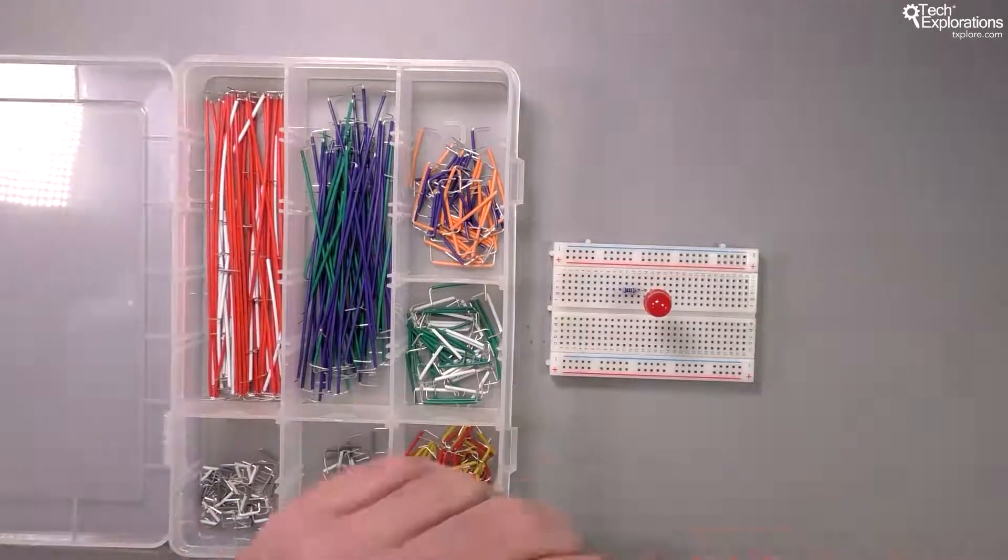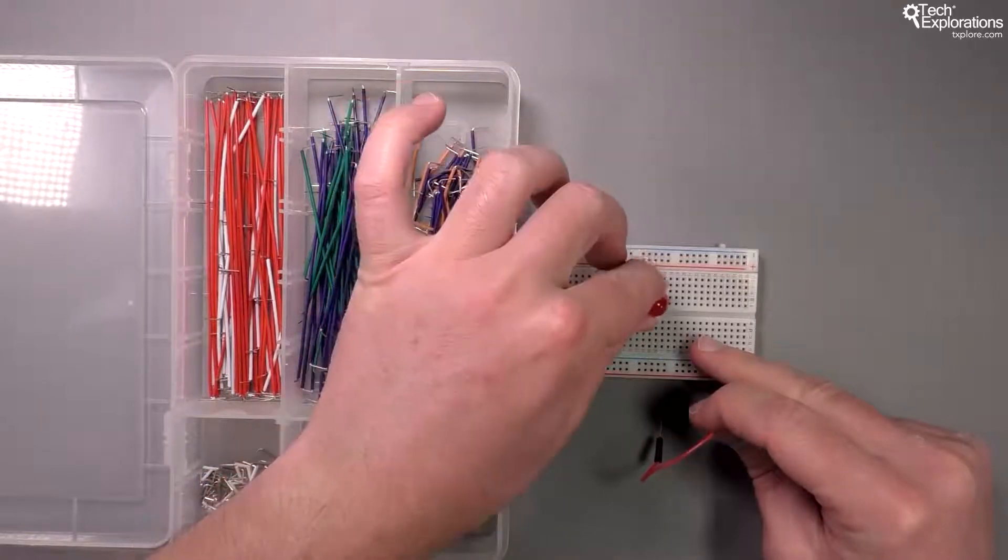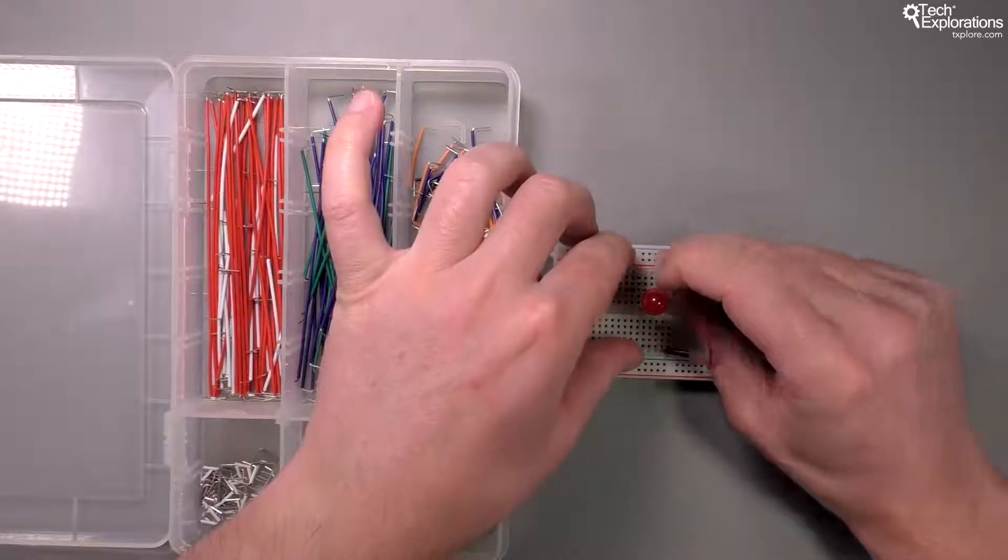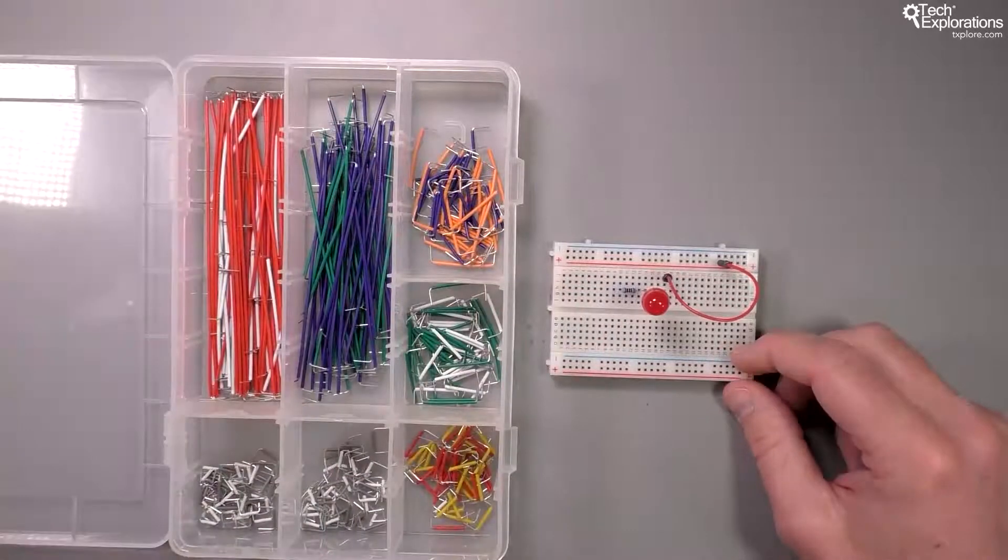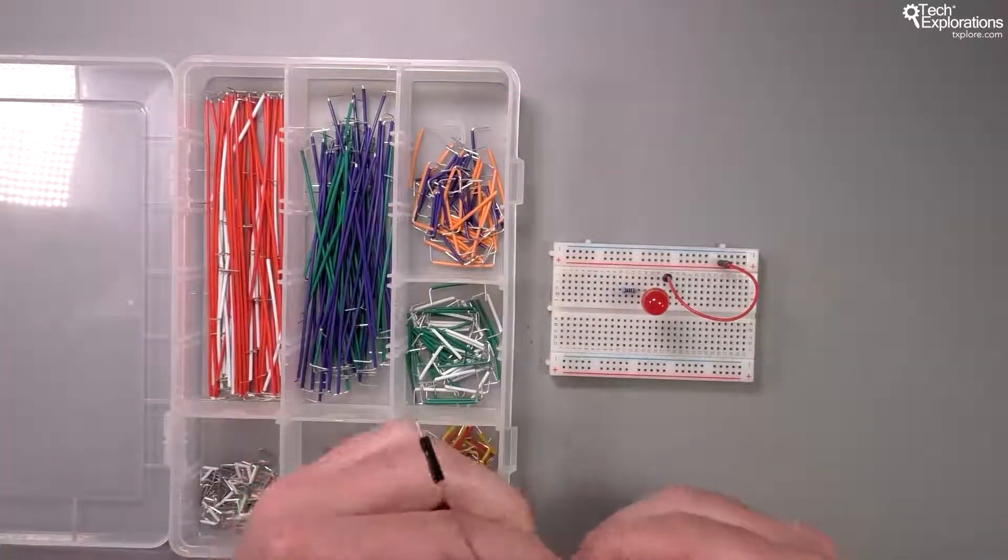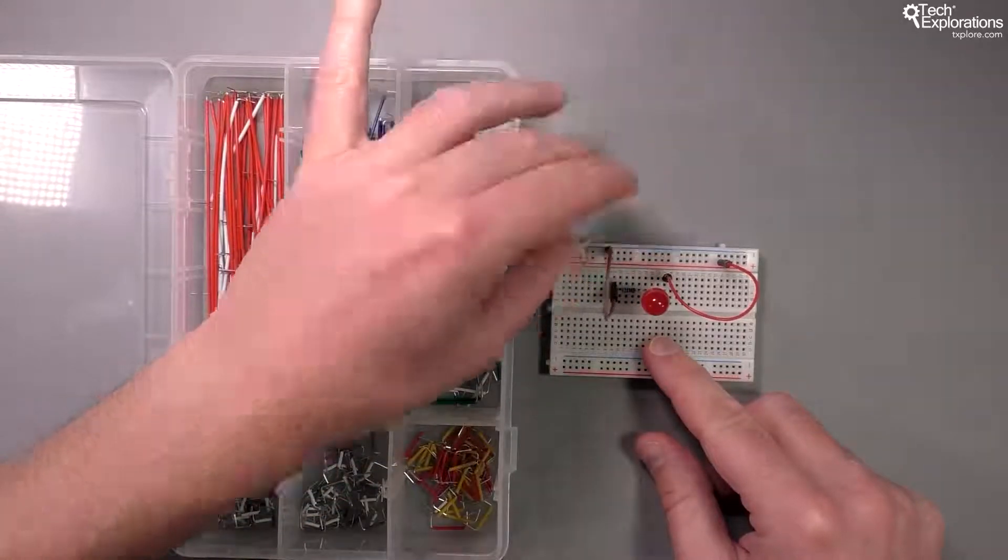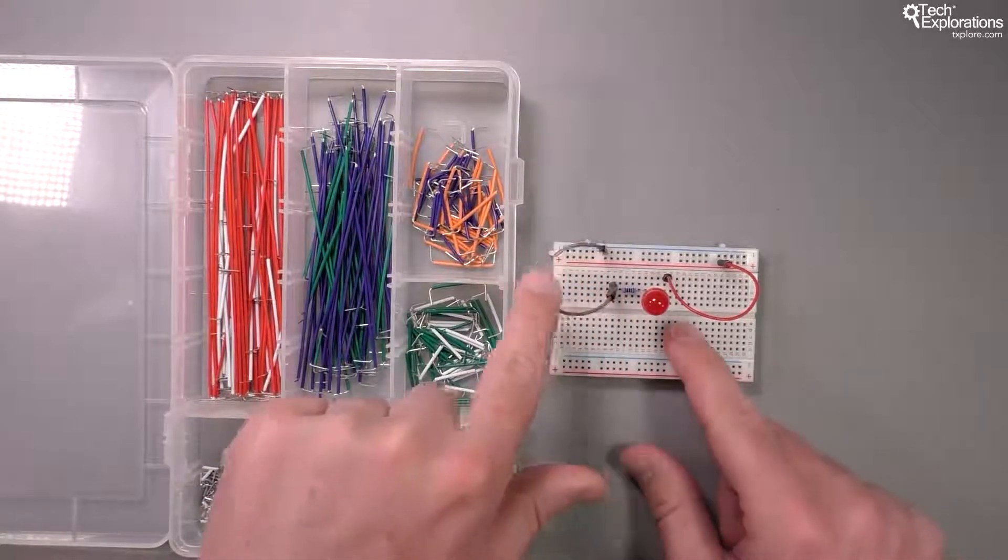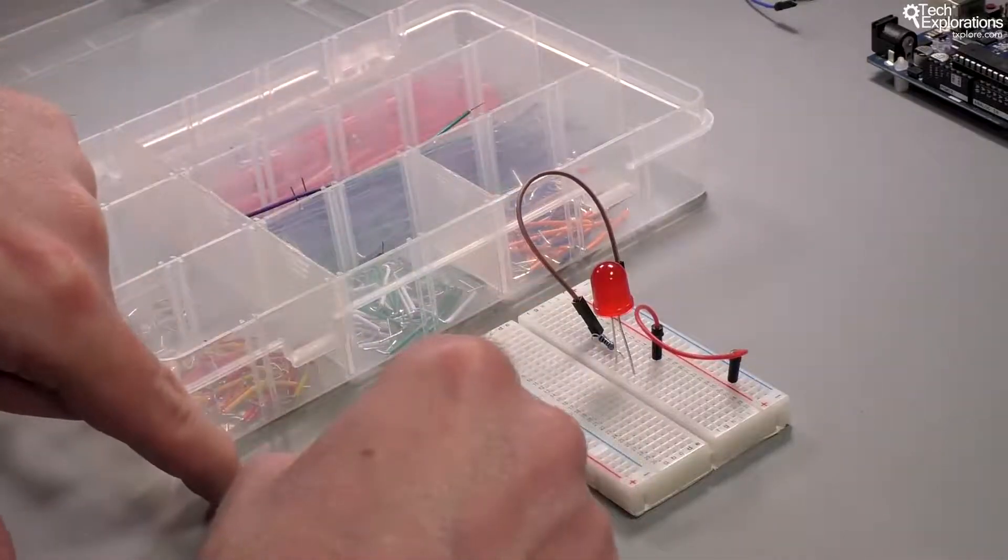I would use a jumper wire to connect the long pin of the LED, the anode, to the red rail. And I'll use a brown jumper wire to connect the resistor to ground. That's okay. Now we've got the flexible jumper wires completing the circuit.